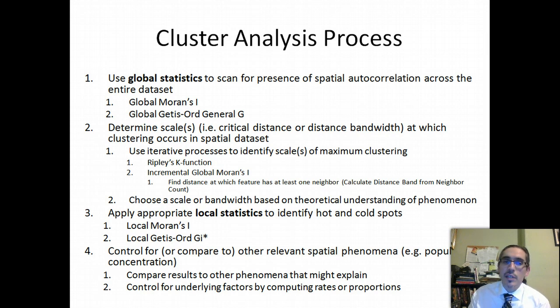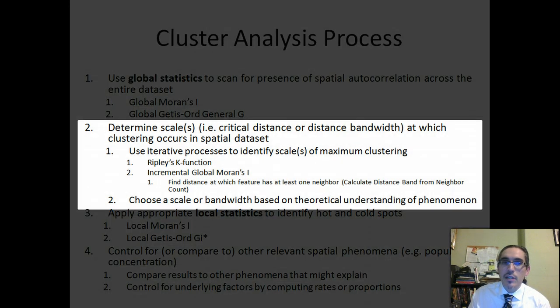Secondly, if you decide to pursue the analysis of spatial autocorrelation with the intention of identifying where in the dataset you are seeing clusters, you have to determine a scale or critical distance at which to do the analysis. Essentially what happens with the cluster analysis process is that the computer is looking to identify which neighboring features or which neighborhood are relevant in the analysis.